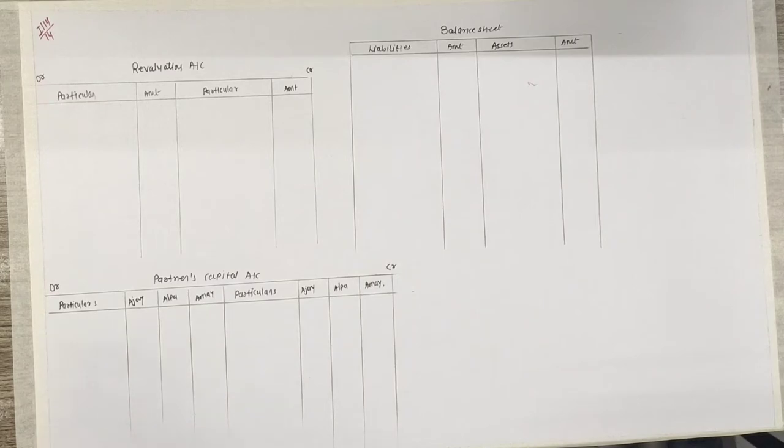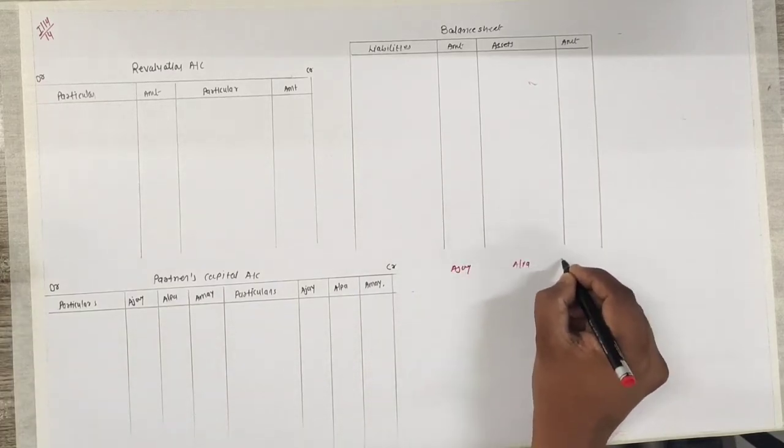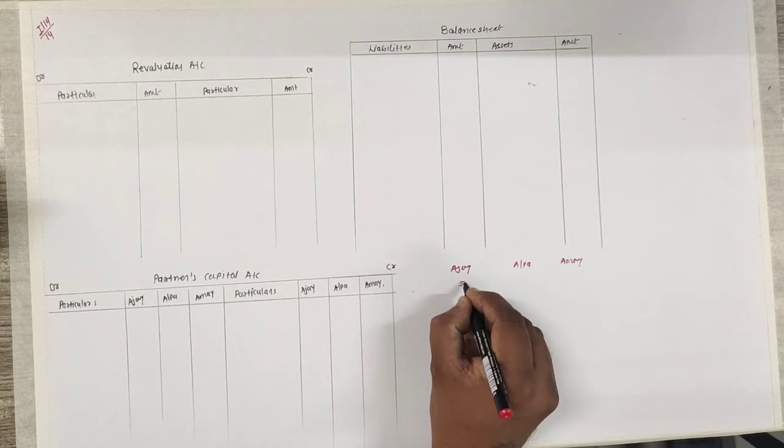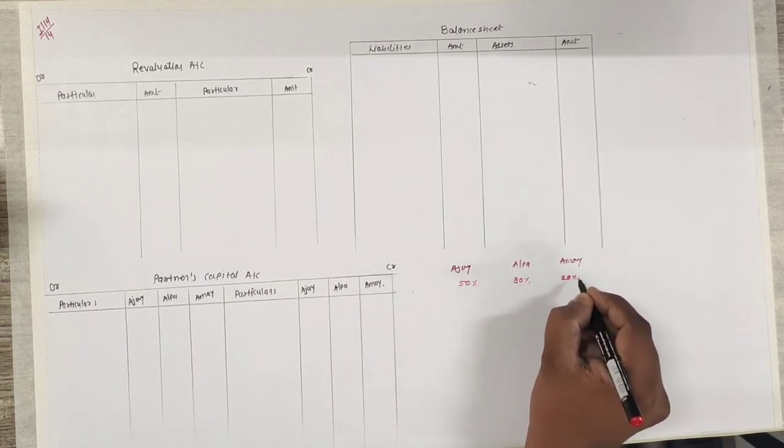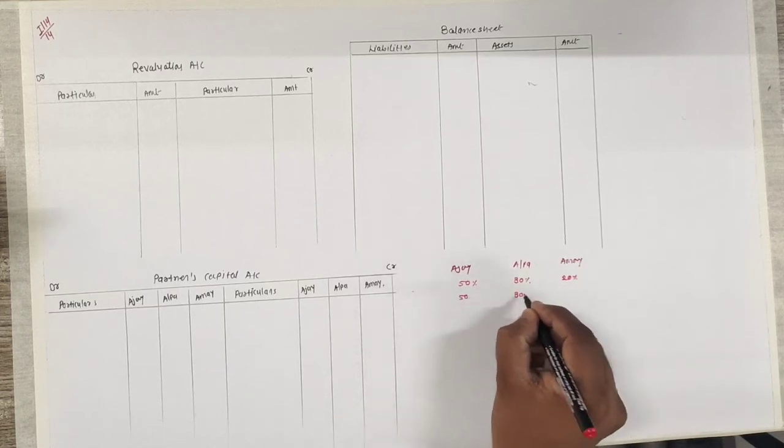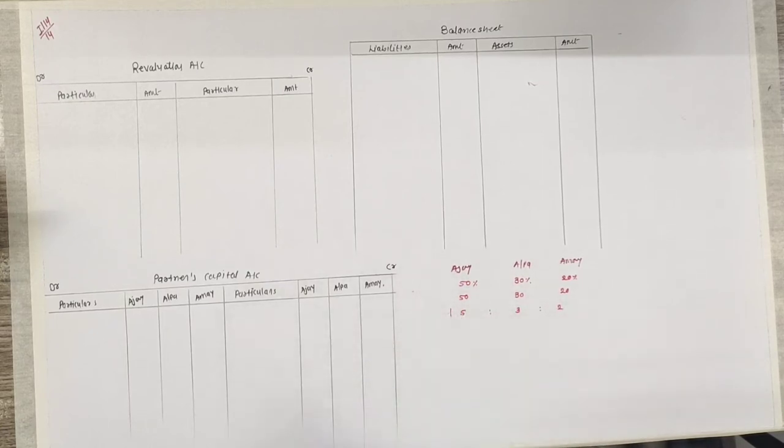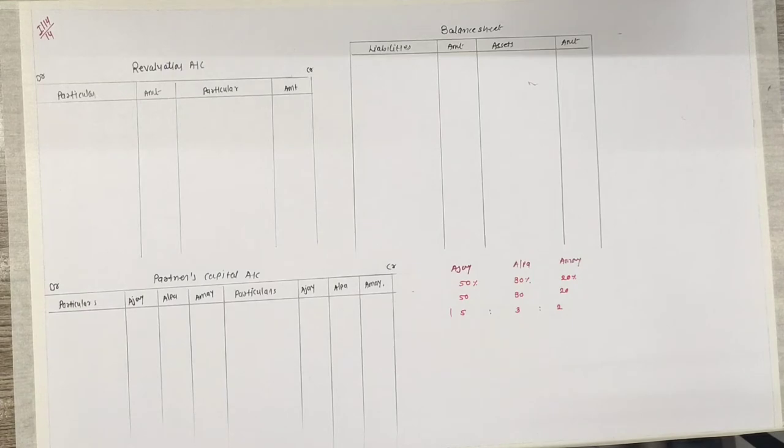Ajay, Alpa and Amai are partners of the firm sharing profit and loss in ratio of 50%, 30%, and 20%. So it's 5 ratio 3 ratio 2. The balance sheet of the firm as on 31st March 2017 was as under.